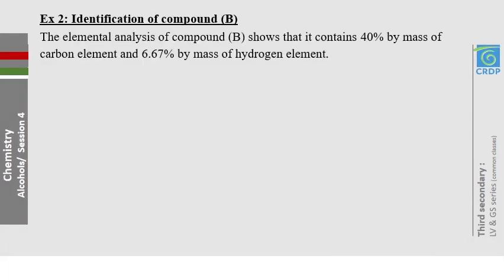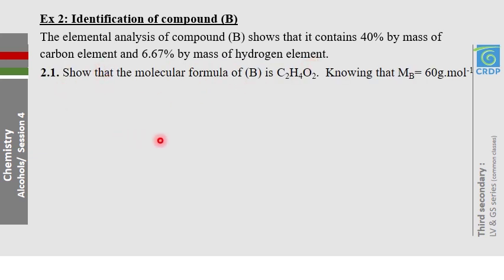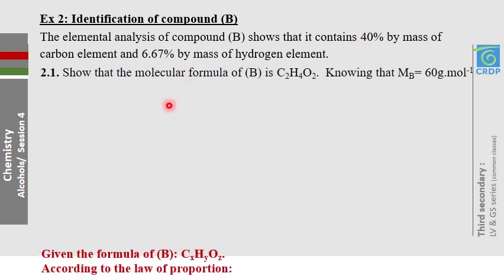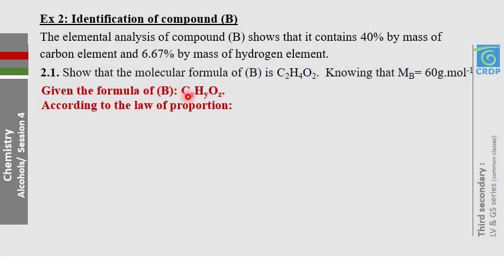Exercise 2: identification of compound B. Elemental analysis shows compound B contains 40% by mass carbon and 6.67% by mass hydrogen. Show that the molecular formula of B is C₂H₄O₂, given a molar mass of 60 g/mol. Let the molecular formula be CₓHᵧOz. Using the law of mass proportions and the given percentages, equate the ratios to find x and y. The percentage of oxygen equals 100 minus the sum of the carbon and hydrogen percentages.